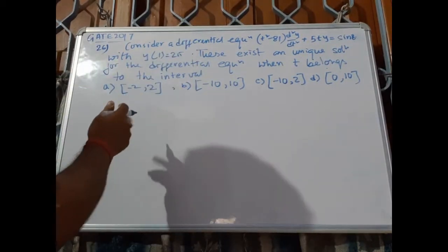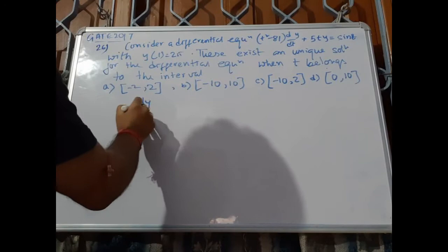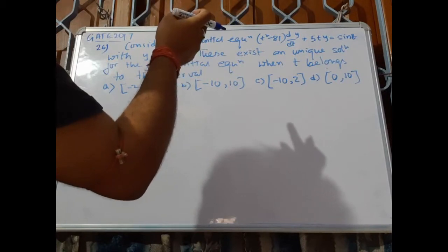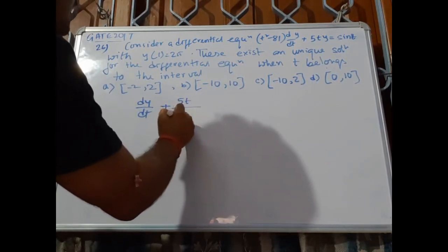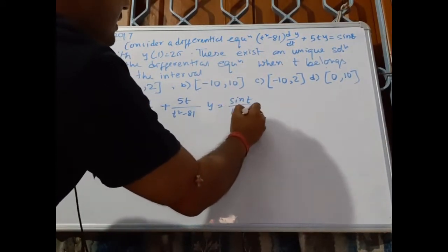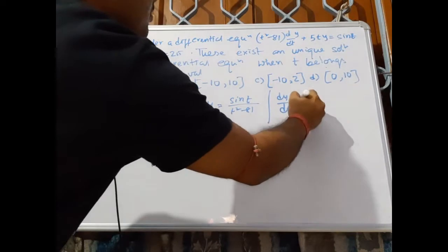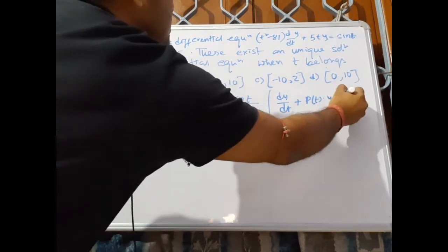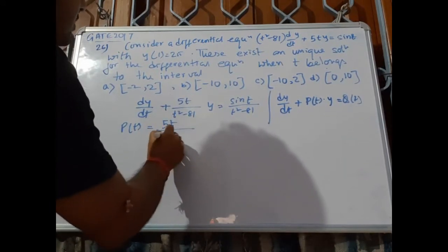Now, if I divide the differential equation by t squared minus 81, what we have is: d²y/dt² plus 5t divided by (t squared minus 81) times y equals sin(t) divided by (t squared minus 81). This is in the standard form dy/dt plus P(t)·y equals Q(t), where P(t) equals 5t divided by (t squared minus 81).